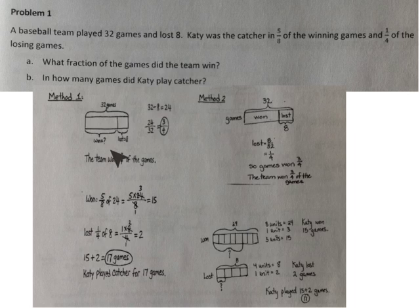We will look at this problem in two different ways. First, our method 1, the tape diagram shows that there were 32 games altogether and that Katie's team lost 8 of them, so we want to know how many they won. 32 games minus 8 games is 24. We know they won 24 games, but it asks what fraction of the games did the team win.